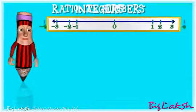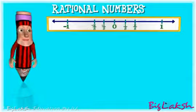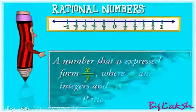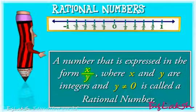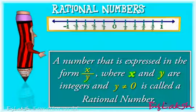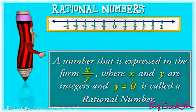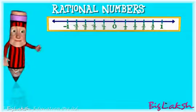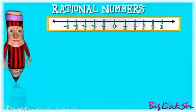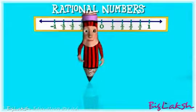Let us move on to rational numbers. You can now observe fractions appearing on the screen. As you are already aware, a number that is expressed in the form of x by y, where x and y are integers and y is not equal to zero, is called a rational number. Notice that fractions also extend indefinitely on both sides of zero on the number line.